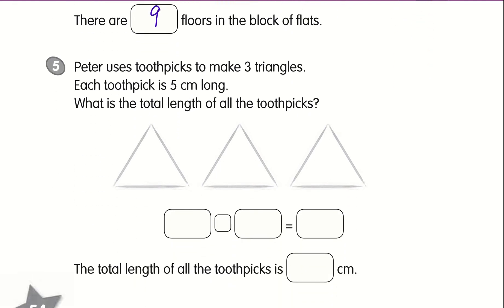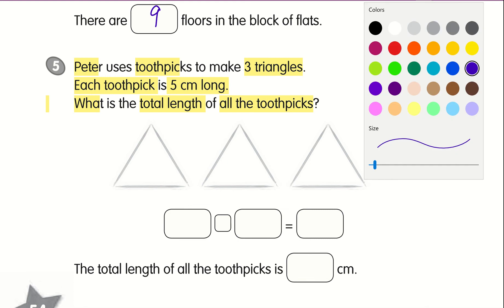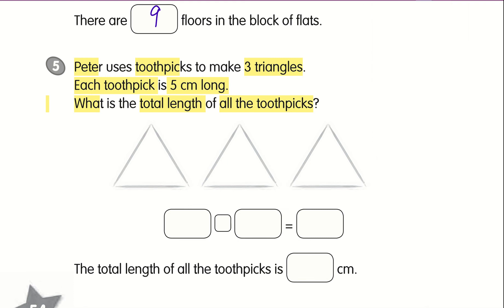Last question. Peter uses toothpicks to make 3 triangles. Each toothpick is 5 cm long. What is the total length of all the toothpicks? We need to take a look at the picture itself. For 1 triangle, you notice there are 3 toothpicks — 1, 2, 3. So you need 3 toothpicks to make 1 triangle, and each toothpick has a length of 5 cm. What is the total length of the toothpicks?